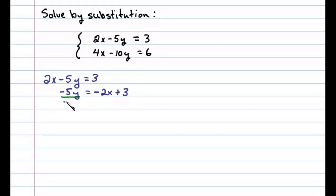Now at this point, dividing both sides by negative 5, we have y equals two-fifths x minus three-fifths.